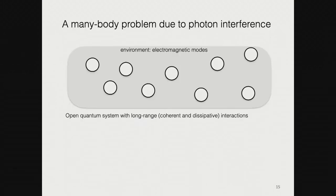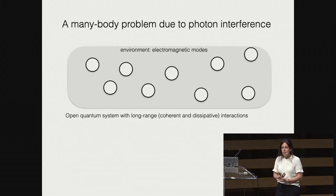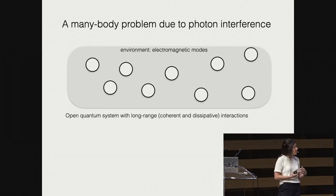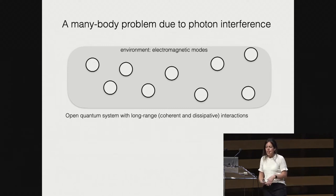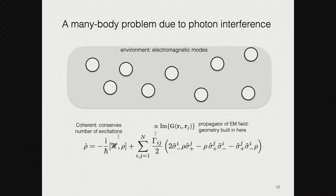The theoretical description: we have in principle N atoms, a Hilbert space of 2 to the N, and many many optical modes. The first step in reducing complexity is integrating out the electromagnetic modes. This yields an open quantum system with long-range interactions that are both coherent and dissipative. We have a density matrix evolution: a coherent Hamiltonian part that conserves the number of excitations, and a dissipative part that is very critically non-local — it involves pairs of atoms, with coupling given by the propagator of the electromagnetic field between those pairs. This is where we build in the geometry (1D, 2D, or 3D array) and the boundary conditions (cavity or free space).